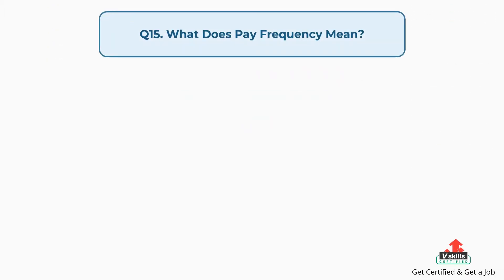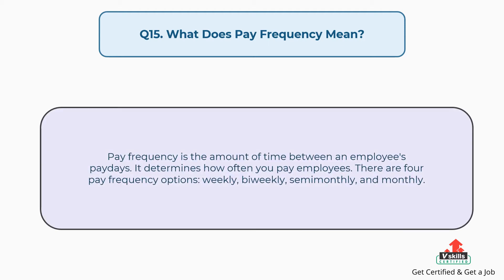Question number fifteen: What does pay frequency mean? The answer is, pay frequency is the amount of time between an employee's pay days. It determines how often you pay employees. There are four pay frequency options: weekly, bi-weekly, semi-monthly, and monthly.